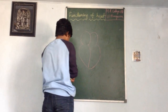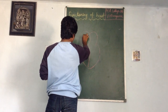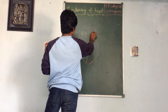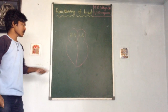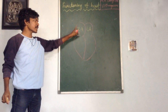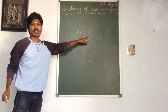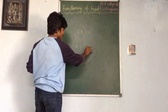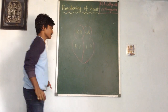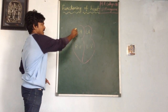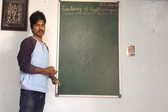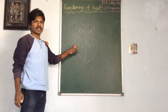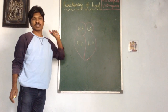This is the right atrium and this is the left atrium. This is the right ventricle and this one is the left ventricle. Shortly, RA means right atrium, LA means left atrium, RV means right ventricle, and LV means left ventricle.